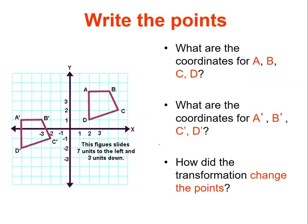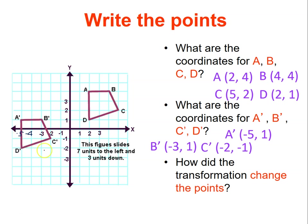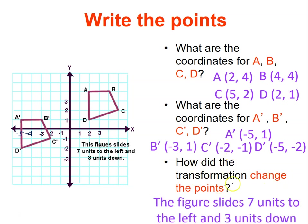What are the coordinates of A, B, C, and D? If it is in quadrant one, all are positive. We have A at two and four, B at four and four, C at five and two, and D at two and one. After the transformation: A prime is negative five and one, B prime is negative three and one, C prime is negative two and negative one, and D prime is negative five and negative two. So you have ordered pairs which are the X and Y values. How did the transformation change the points? The figure slides seven units to the left and three units down.